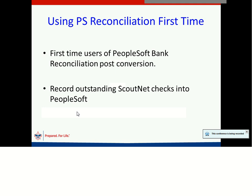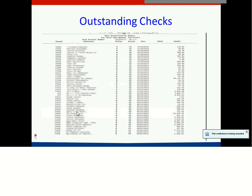For those of you using the PeopleSoft reconciliation for the first time after conversion, you're going to need to record your outstanding ScoutNet checks into PeopleSoft. Prior to conversion, we suggested you print out a bank reconciliation worksheet from ScoutNet so you could determine which checks are outstanding. Here's a sample of that bank reconciliation report from ScoutNet. Using this, you take your bank statement and check off items that have cleared the bank, and the only items we're concerned with are those that have not cleared.